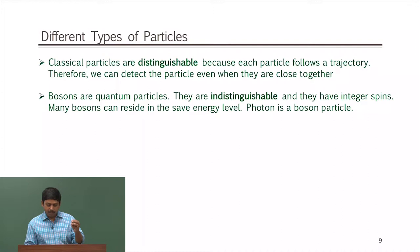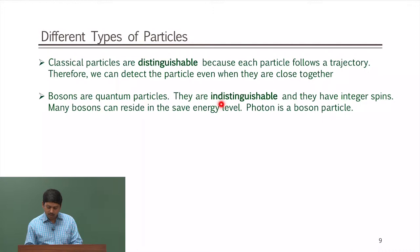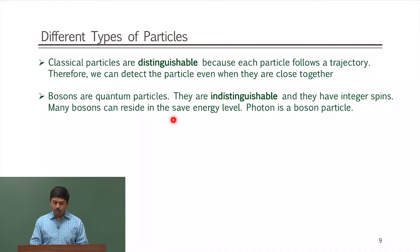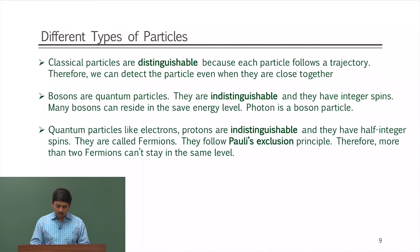However, for quantum particles — for example, bosons and fermions — they are indistinguishable. There are two kinds of quantum particles. One is called a boson, which is indistinguishable and has integral spins. Another characteristic of bosons is that many of them can reside on the same energy level. Photon is a boson particle; the Higgs boson that people know about is also a boson with integral spins.